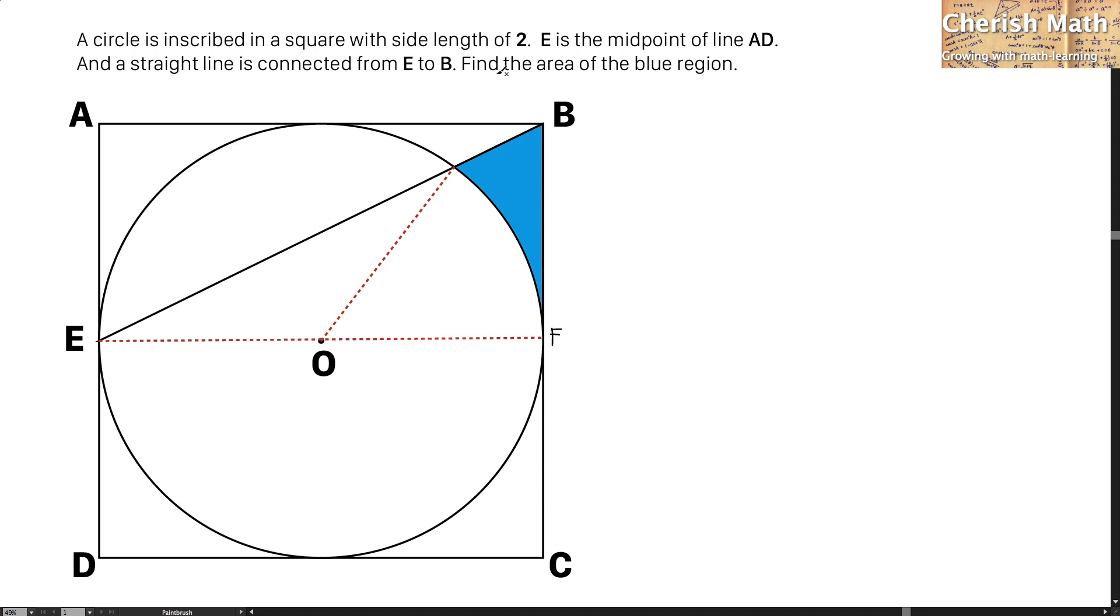Since the side length is given as 2, the line AB is 2, and the line BF is going to be half of the side length, that is 1 unit.